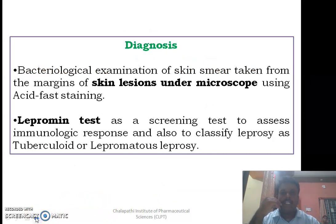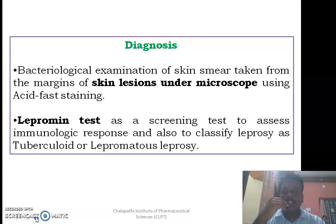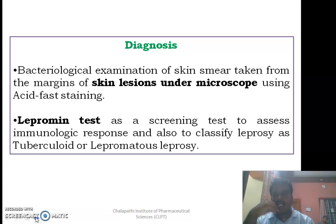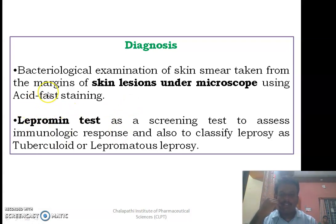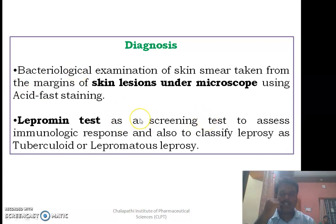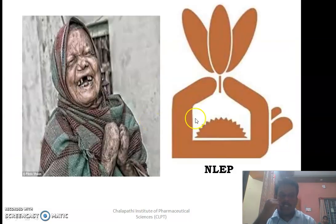Diagnosis is mostly based on the skin smear test under microscope — samples from skin lesions are examined for the presence of acid-fast Mycobacterium leprae. A screening test called the lepromin test is also used, involving intradermal injection of a purified protein derivative of leprosy into the forearm. However, it is only a screening test, not a diagnostic test; a positive lepromin test must be confirmed by microscopic examination.